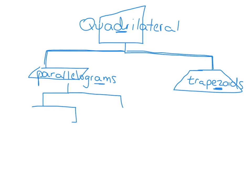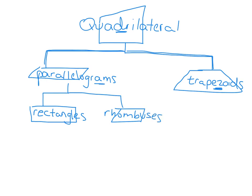Underneath the parallelograms I am going to put two more branches: on the left side, rectangles, and on the right side, rhombuses. Rectangles are for shapes with right angles, and rhombuses are for shapes that have four equal sides. A rectangle is also a parallelogram because it falls underneath it on the family tree, and it's also a quadrilateral. A rhombus is also a parallelogram and also a quadrilateral.